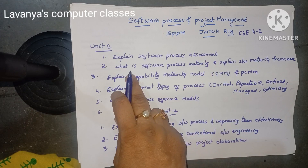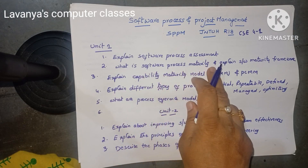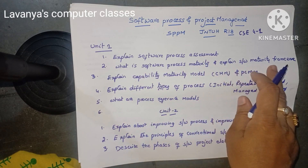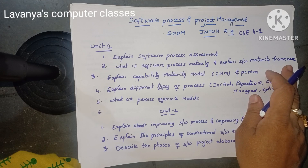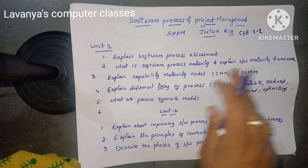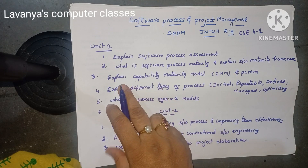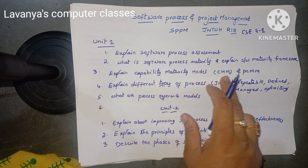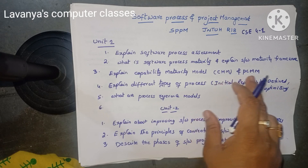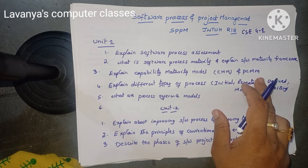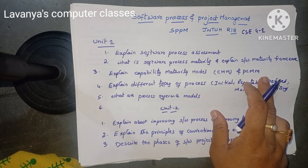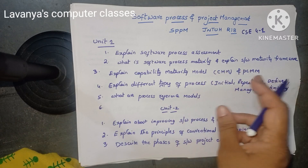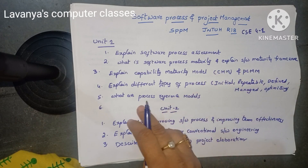Second one is: what is software process maturity and explain software maturity framework? Third question is: explain Capability Maturity Model (CMM) and also explain PCMM. Either this question or that question, but it is a very important question.